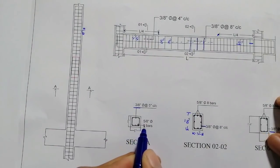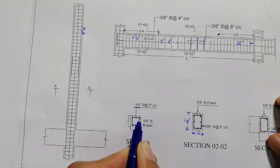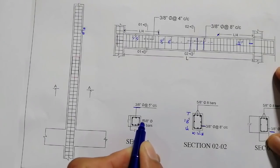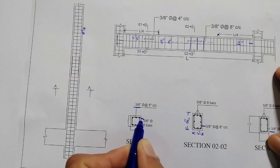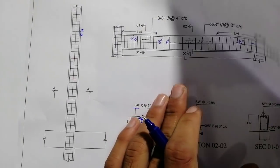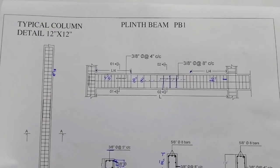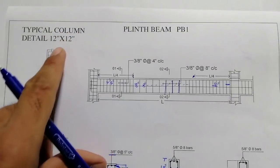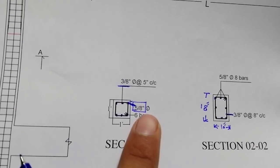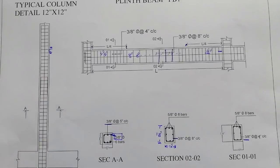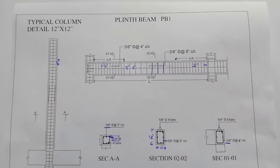The total number of steel bars used in the RCC column is 6 — one, two, three, four, five, six. The size of the RCC column is 12 by 12 inches. For the longitudinal bars, number 5 diameter — 5/8 inches — is used. This is the steel structure drawing especially for the plinth beam. You can also see the typical column detail: 12 by 12 inches, one foot.